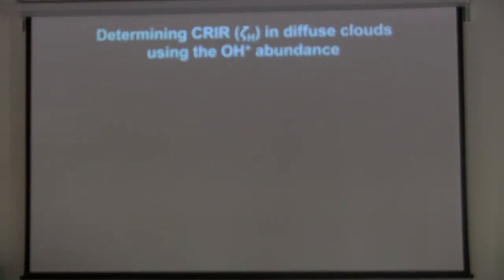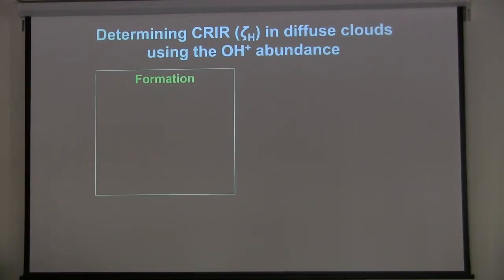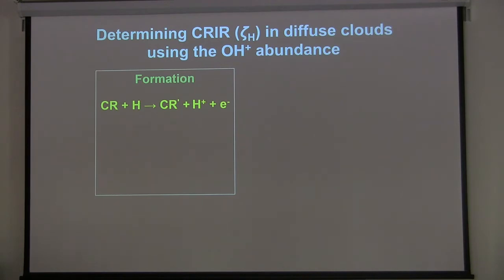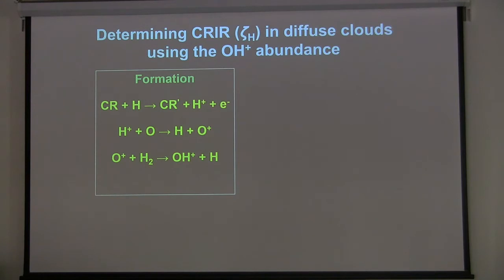How do we determine the cosmic ray ionization rate, and why is it important? It drives the chemistry, chemistry affects the cooling, and it determines the ionization fraction of the cloud, which couples the physical dynamics to the ambient magnetic field. Ions interact with the magnetic field, transfer momentum to the neutral gas, and that can affect angular momentum transfer, dissipation of turbulence, and impede the collapse of the cloud. We use OH+ to determine the cosmic ray ionization rate. A cosmic ray hits a hydrogen atom, ionizes it, giving a proton and an electron. That proton undergoes charge exchange with a neutral oxygen atom giving O+, which rapidly undergoes hydrogen abstraction with H2, giving OH+.